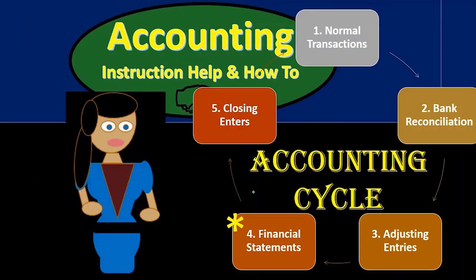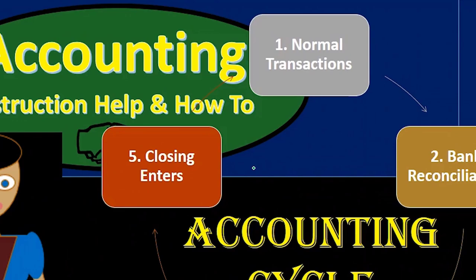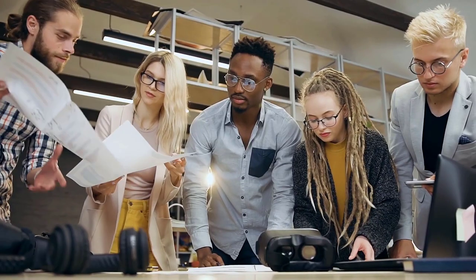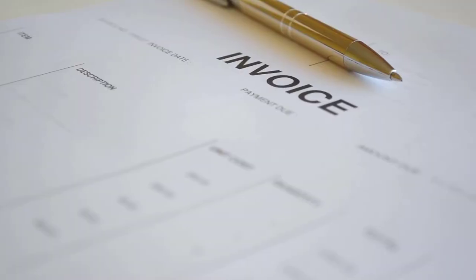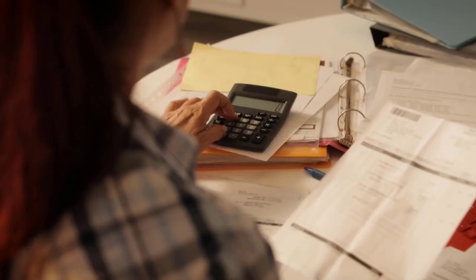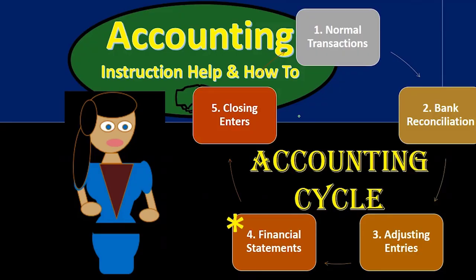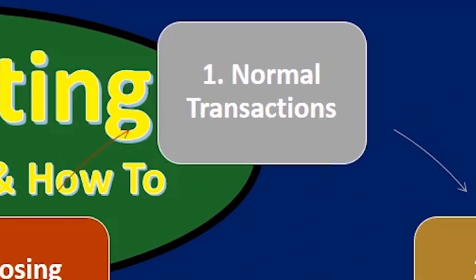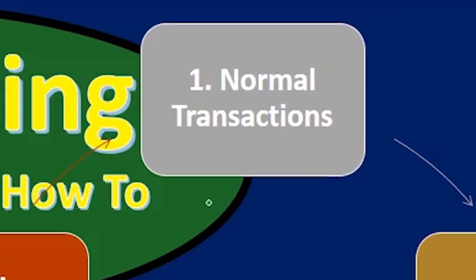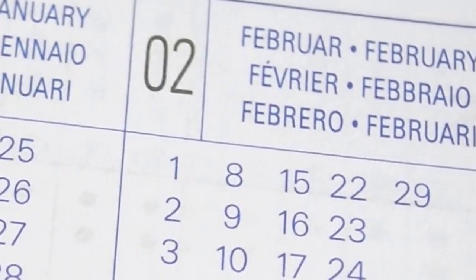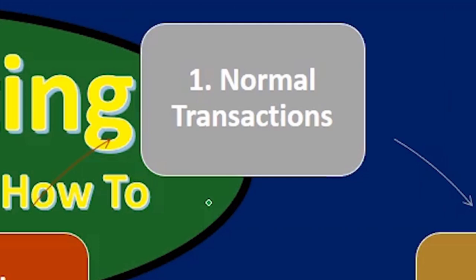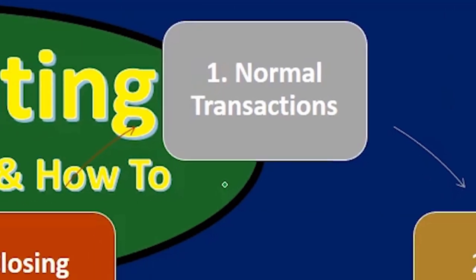The first step we're going to consider is normal transactions — the things the accounting department is doing throughout the month: entering invoices, entering bills, dealing with payroll. All the stuff we generally think of in terms of the accounting department goes into step one. In terms of timing, step one is far greater than any of the other steps because that's what's happening throughout the entire month.